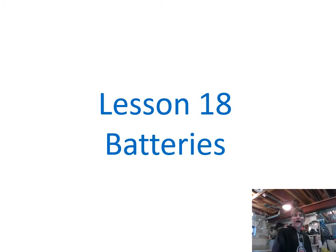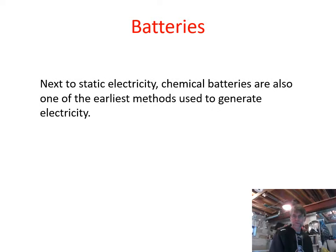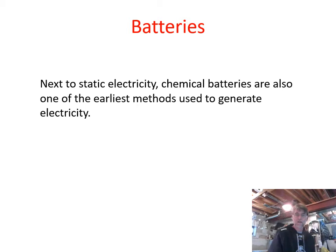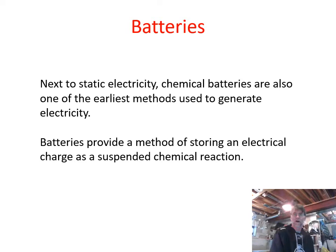Our final lesson, Lesson 18, is on batteries. We already mentioned batteries briefly in the previous slideshow. Batteries are one of the earliest methods used to generate electricity. We started with friction in the history lesson, and then moved to chemical reactions that could create EMF or a potential difference.